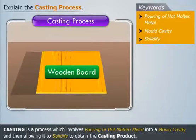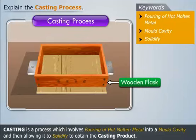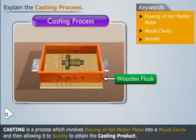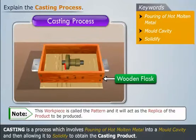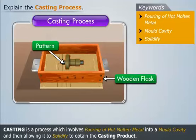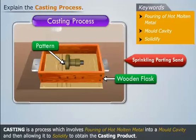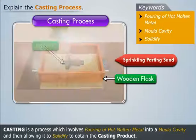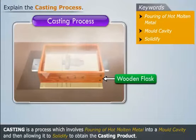First, place a wooden board on the table and then place a wooden flask on the board. Now at the center of the flask, place a wooden workpiece. Note that this workpiece is called the pattern and it is the replica of the product to be produced. Now sprinkle some parting sand in and around the pattern.